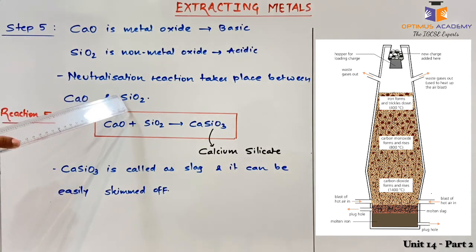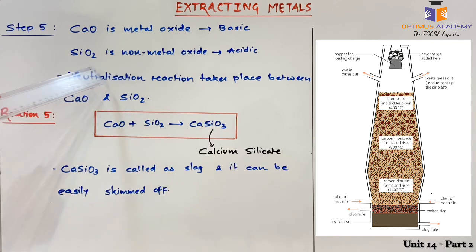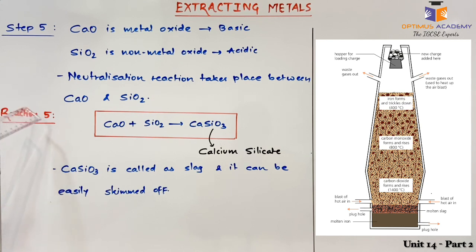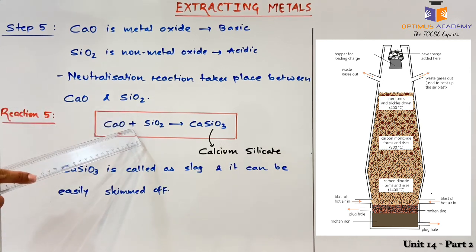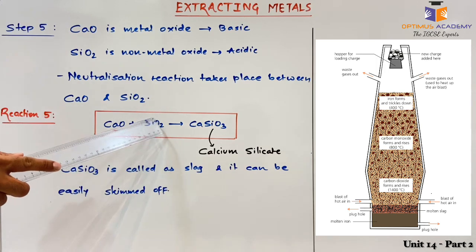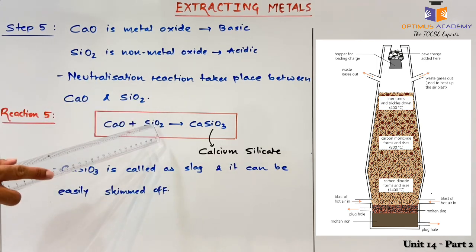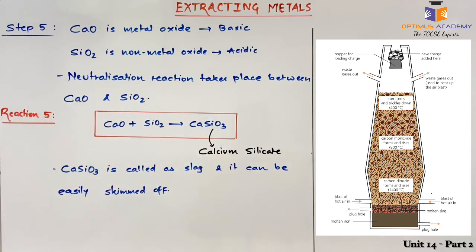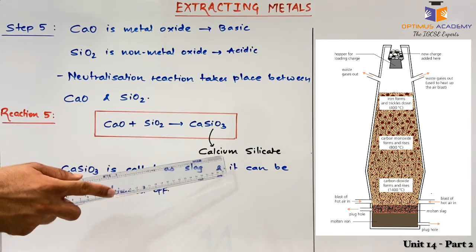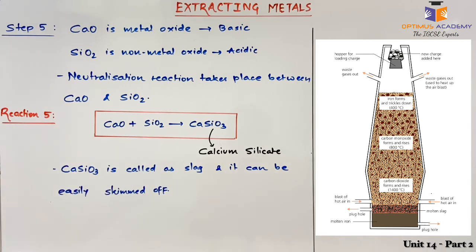Hence, calcium oxide and silicon dioxide undergo a neutralization reaction. The 5th reaction in the blast furnace is: CaO + SiO2 → CaSiO3. Calcium silicate is called slag and it can be easily skimmed off from the surface of iron.